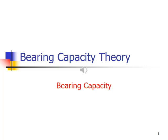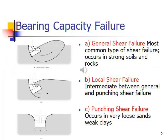Bearing capacity. There are three types of bearing capacity failures. One is general shear failure, the most common type of shear failure that occurs in strong soils and rocks.